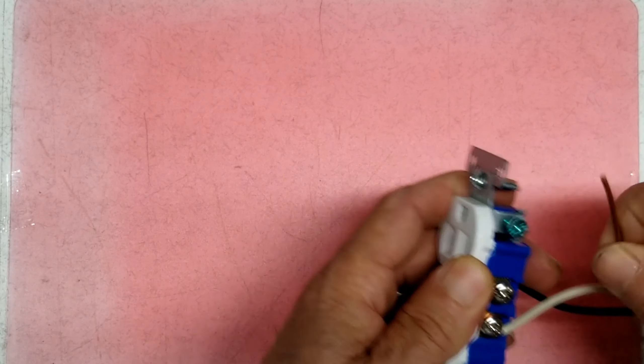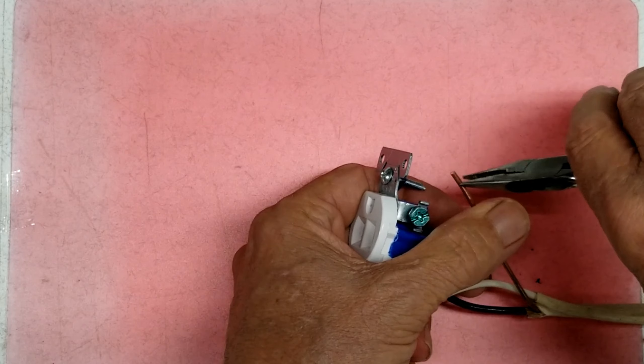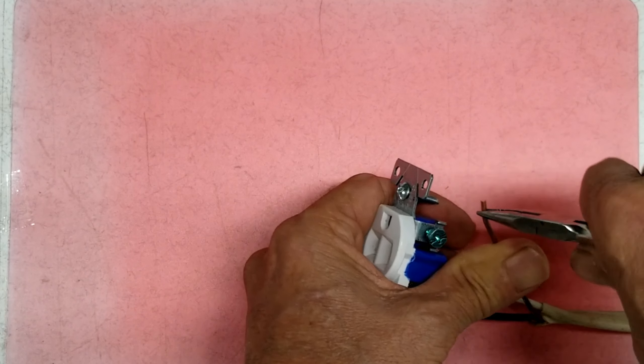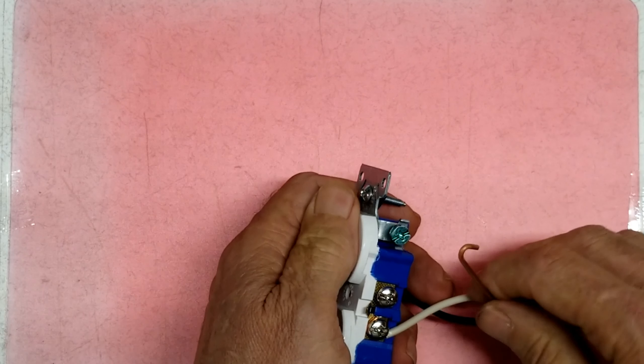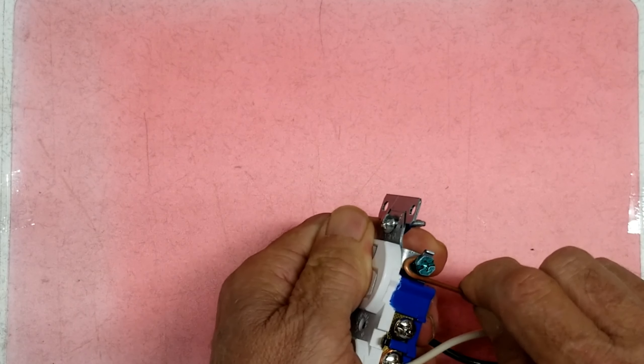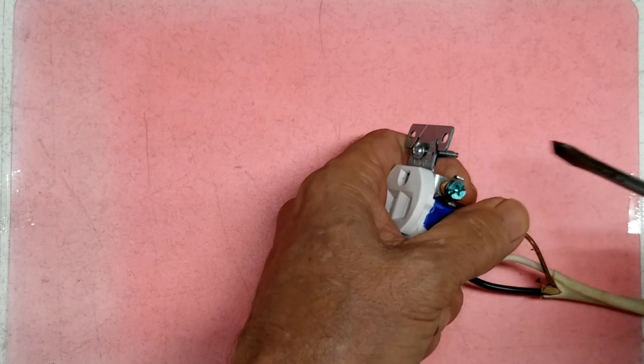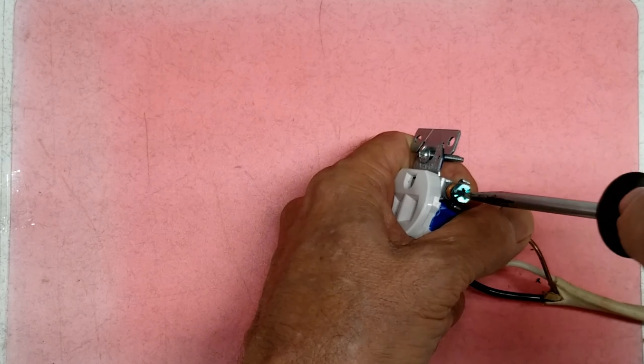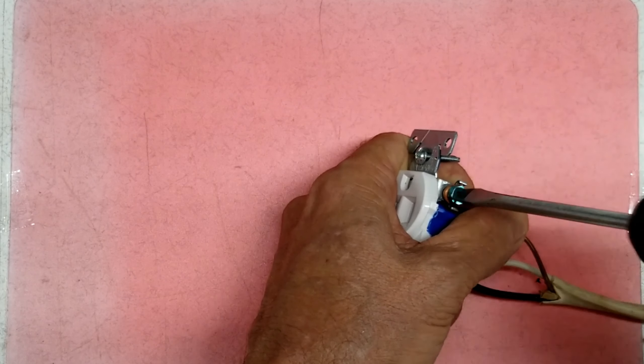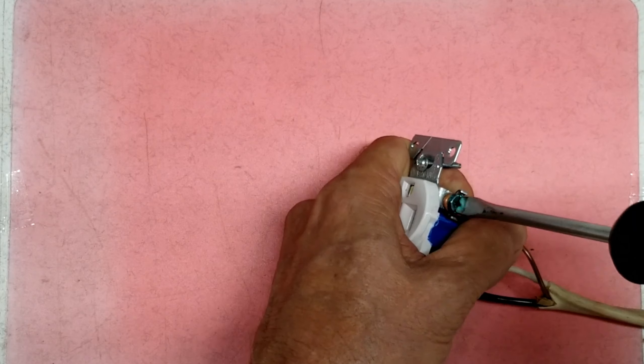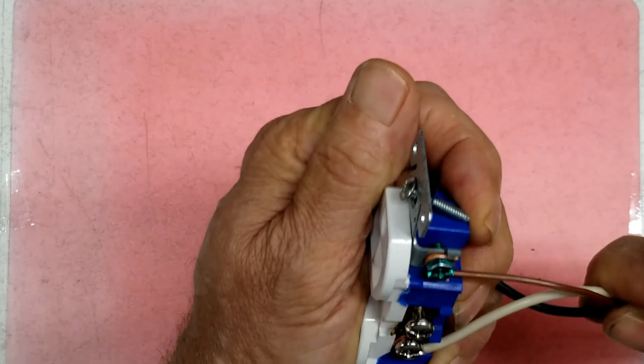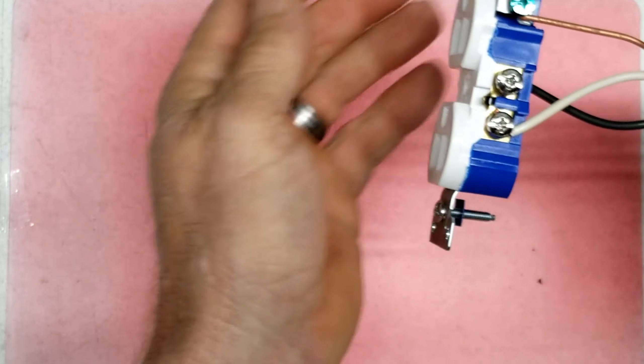There you go. And on your ground, come over here to your ground. Just put your little fish hook in it. There you go.